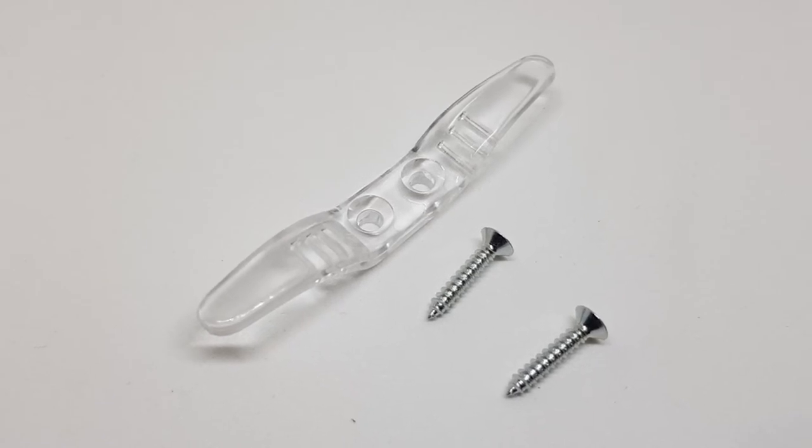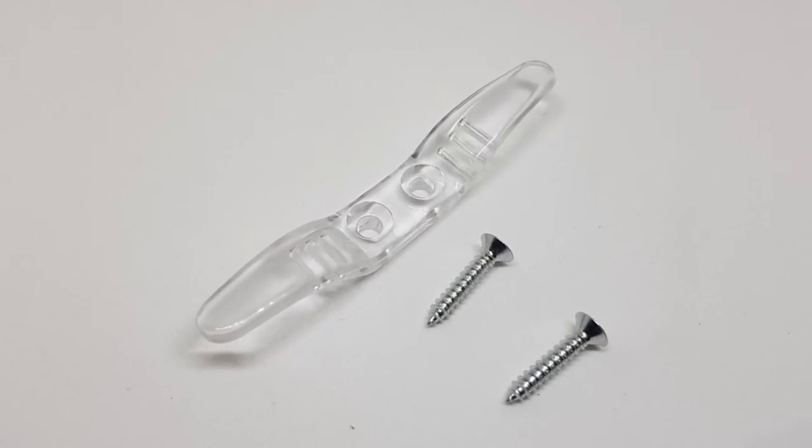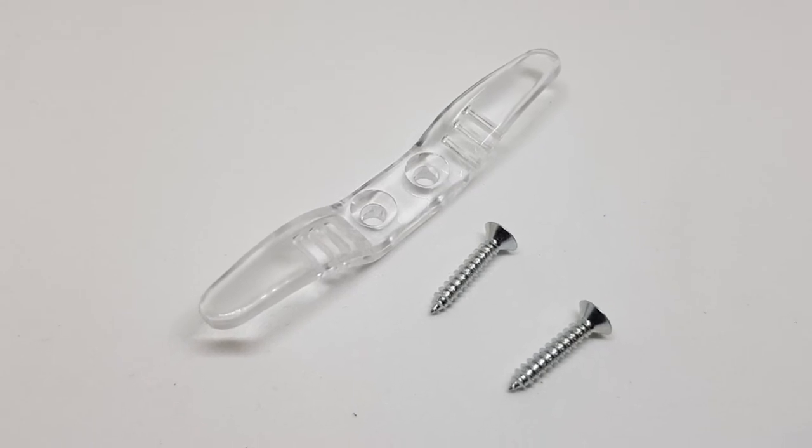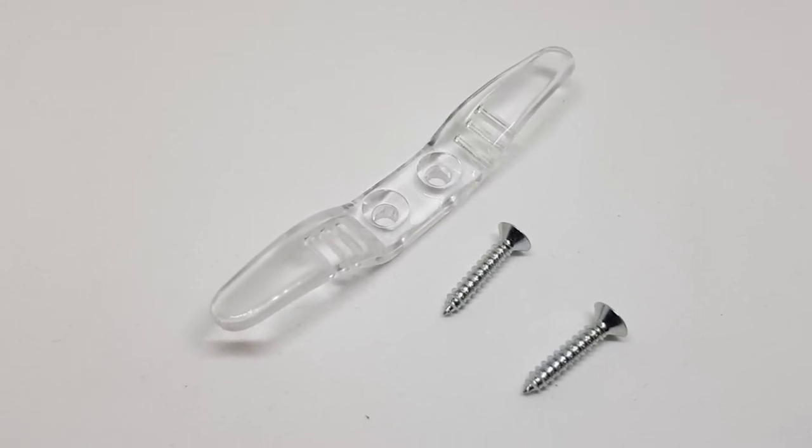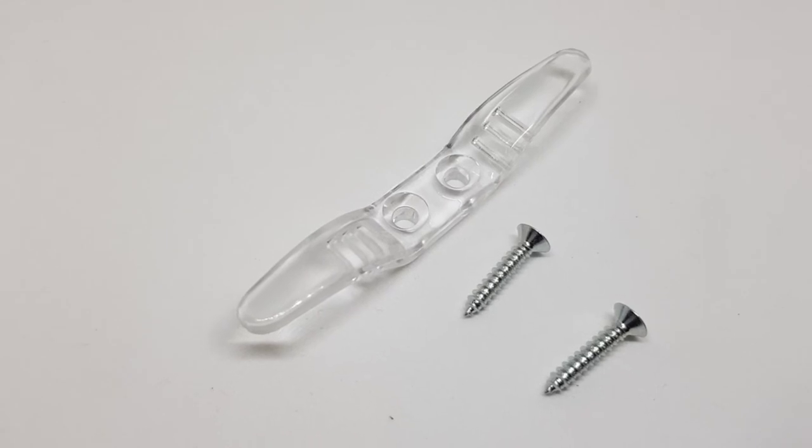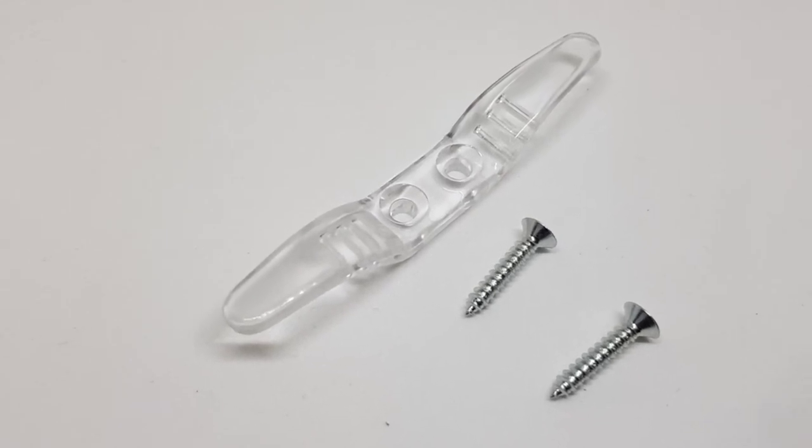This is to be installed at least 1600mm above the floor level. This wall cleat comes with two screws.